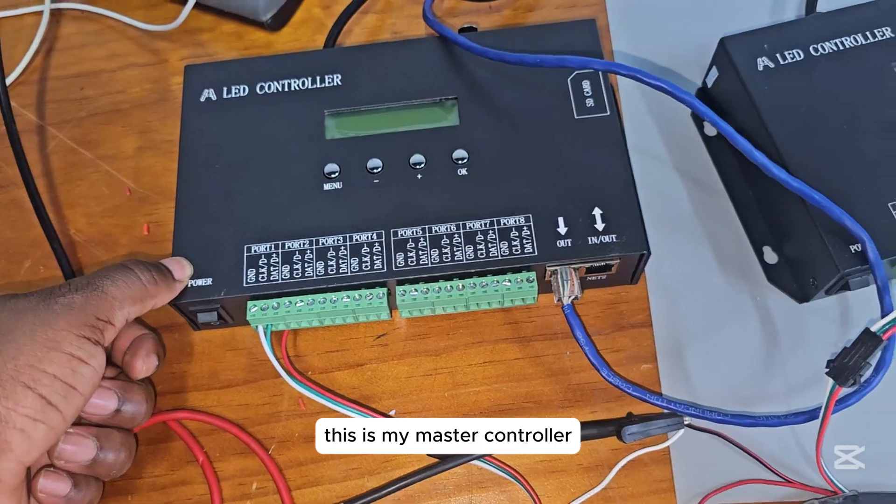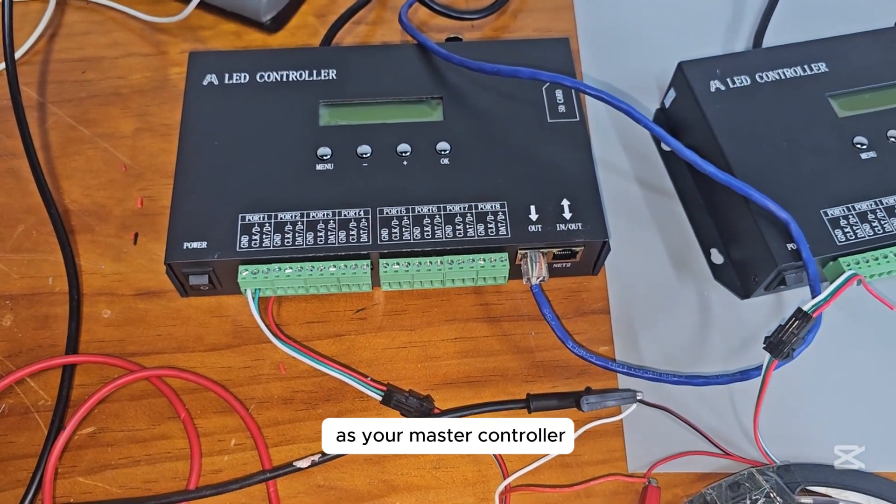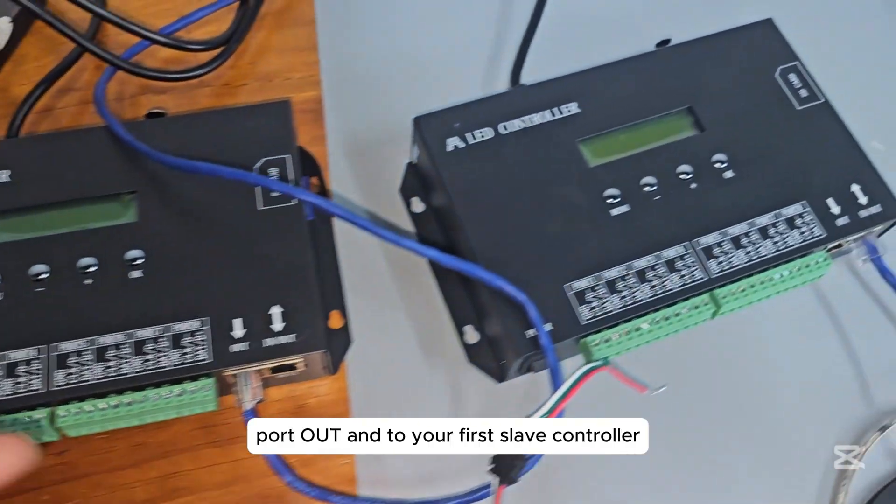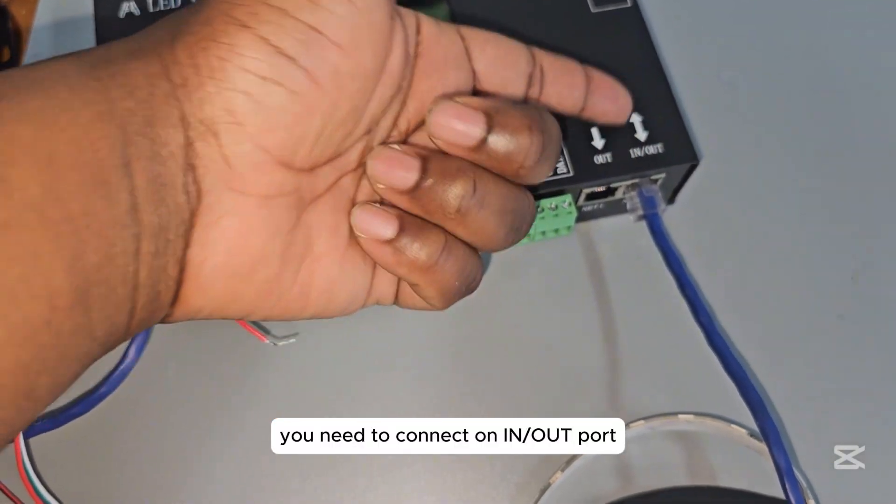This is my master controller and this is my slave controller. The one controller which you choose as your master controller, make sure you connect the first ethernet cable on port out, and to your first slave controller you need to connect on in/out port.